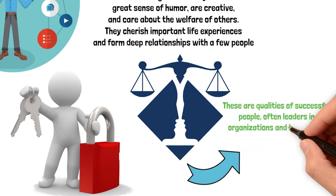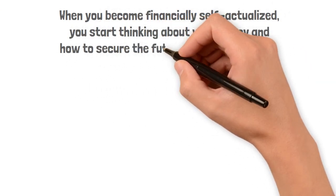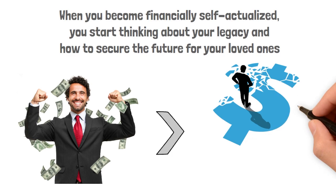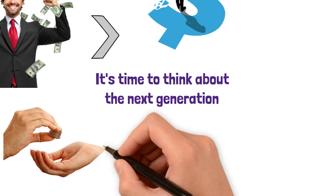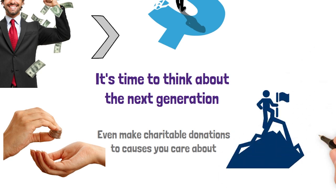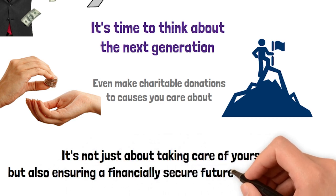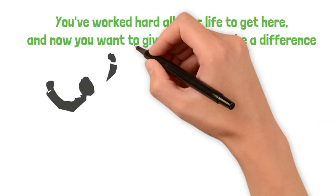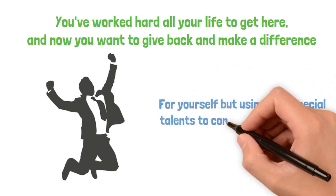When you become financially self-actualized, you start thinking about your legacy and how to secure the future for your loved ones. After managing your finances well, enjoying a good income, and having a strong financial plan, it's time to think about the next generation. You might plan to pass on your wealth to your children through tax and estate planning, or even make charitable donations to causes you care about. Reaching this level is a huge accomplishment. It's not just about taking care of yourself, but also ensuring a financially secure future for those you love. You've worked hard all your life to get here, and now you want to give back and make a difference.